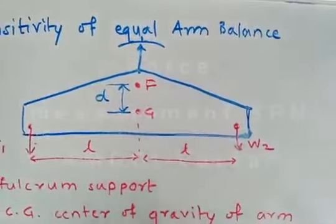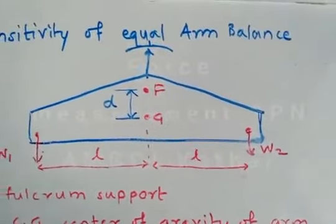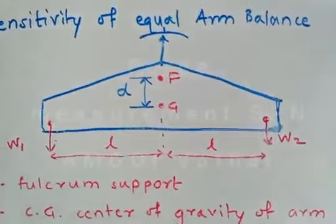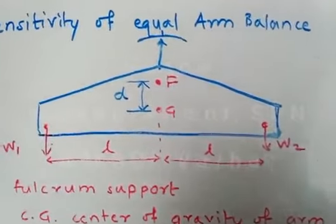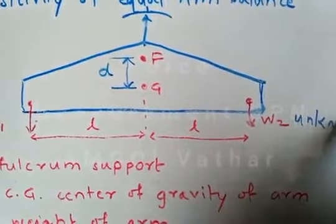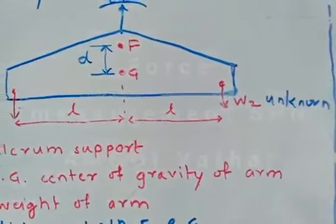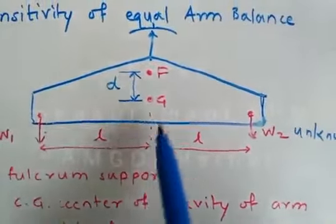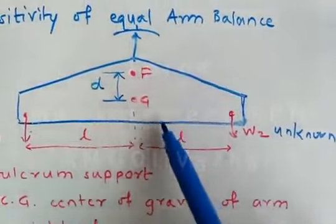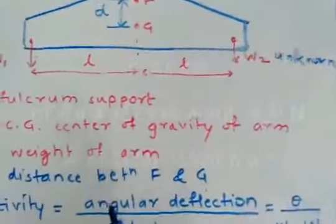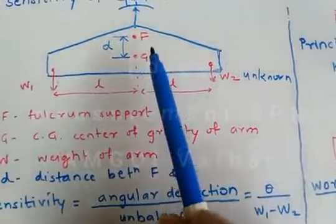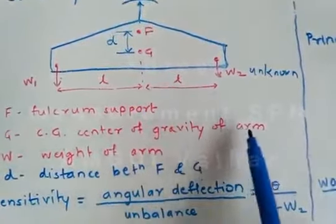W1 and W2 are the points where the known and the unknown force are applied. So at W2, the unknown force is applied. These two points are at a distance L from the fulcrum, and small d is the distance between point F and point G—that is, the distance between the fulcrum support and G, the center of gravity of the arm.